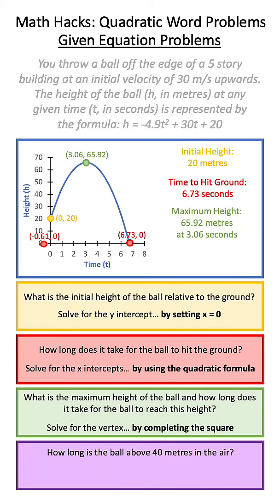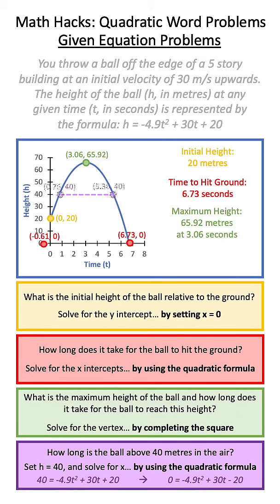The final thing we could be asked is how long is the ball above 40 meters? To do this we'd set h equal to 40 and solve for x by using the quadratic formula. Now make sure to set everything equal to 0 before you use the quadratic formula. We get two different answers and by subtracting them we get our final answer.